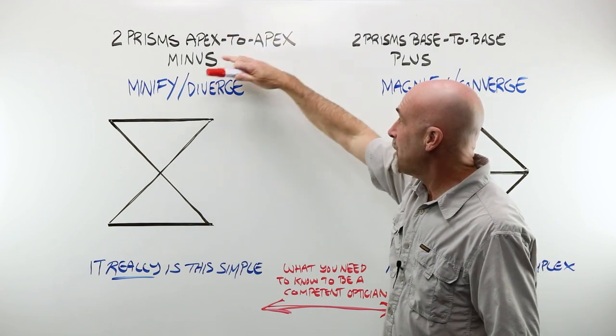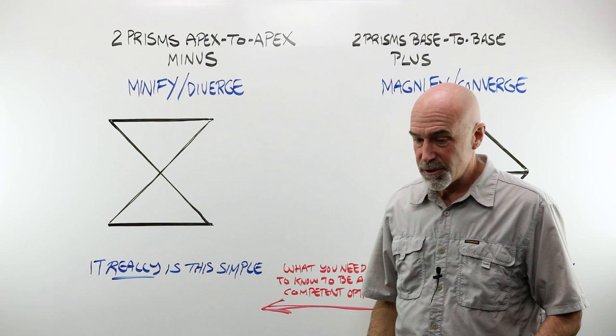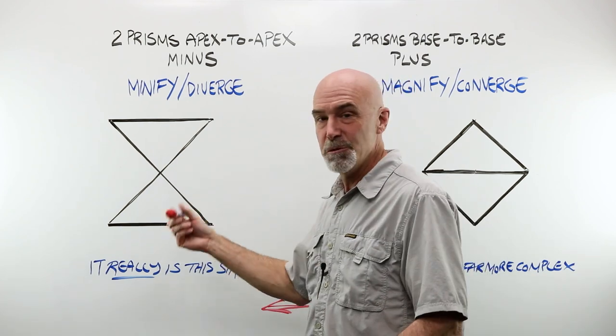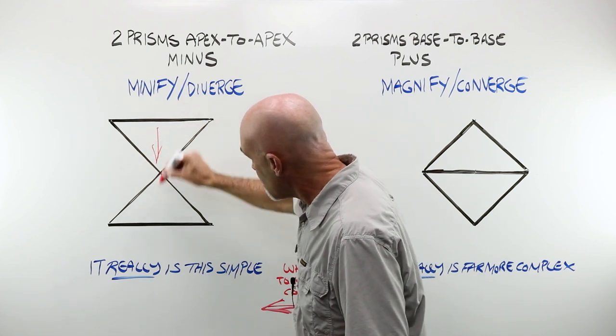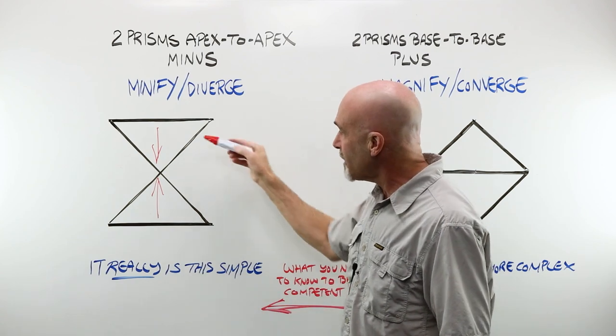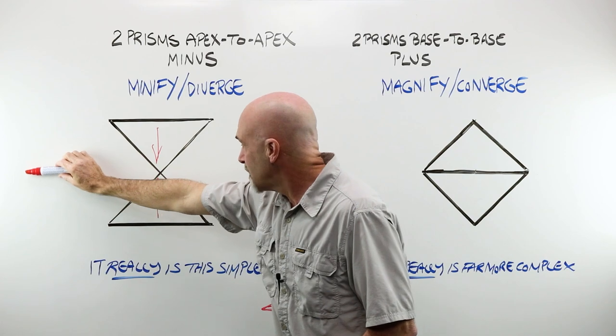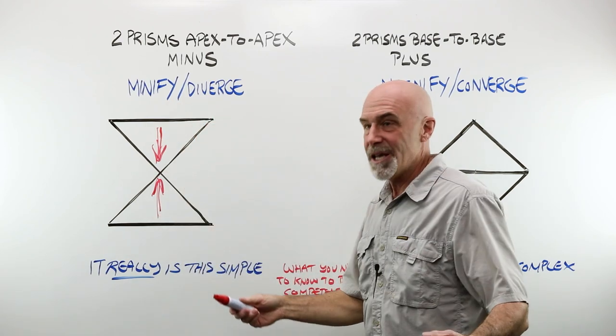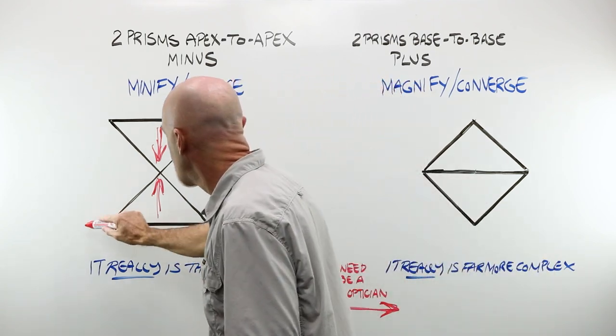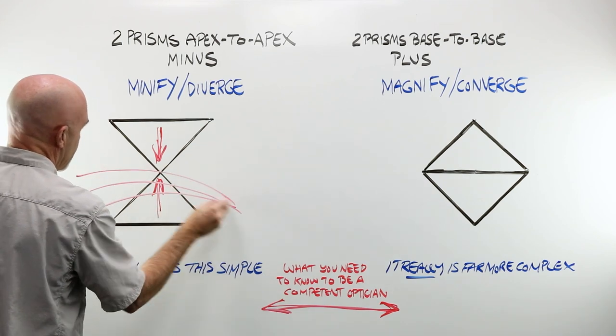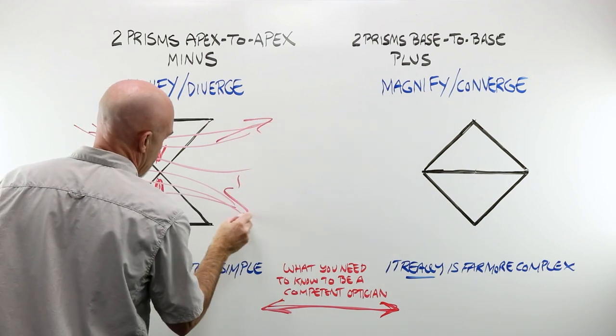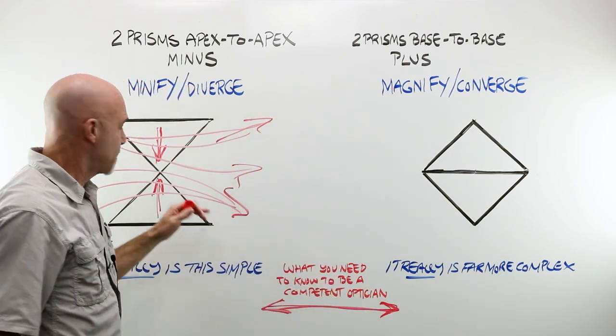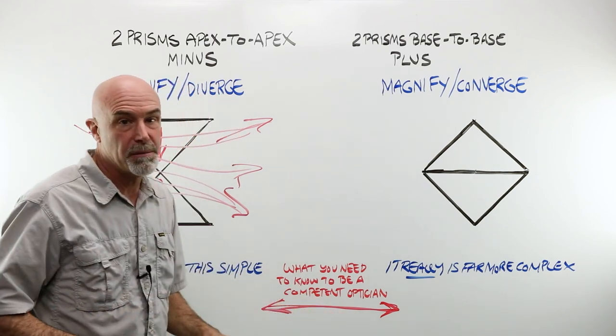Two terms to know when we're talking about that apex to apex, minus lens: minify and diverge. A minus lens is said to minify something that we look through, look at, through a minus lens. Why is that? Because the image, when viewed through a prism is shifted towards the apex. If I'm looking through this lens, the object on this side is going to be pushed towards the apex, compressed, minified, shrunk. Light, we say, bends or redirects around the base. If all of my light is doing this, these rays are diverging. They're going away. And when we learn how to control that by controlling this, that's when we become a competent optician.